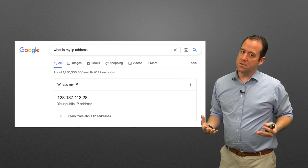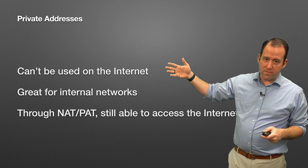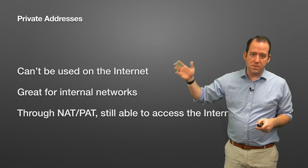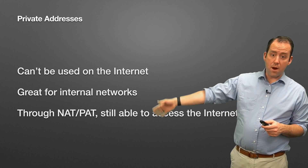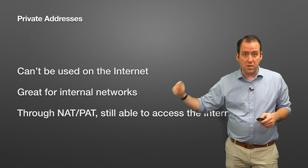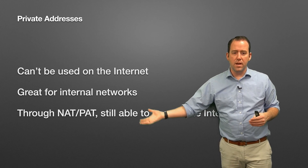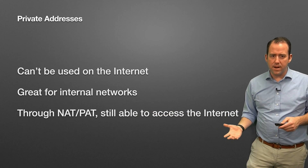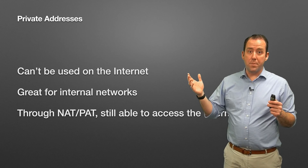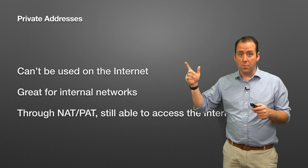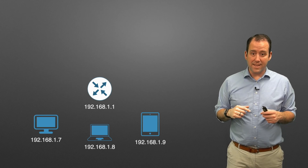Private addresses can't be used on the internet but are great for internal networks. Through network address translation - also known as NAT overloading, also known as port address translation - devices are still able to access the internet by borrowing a public address from somewhere else.